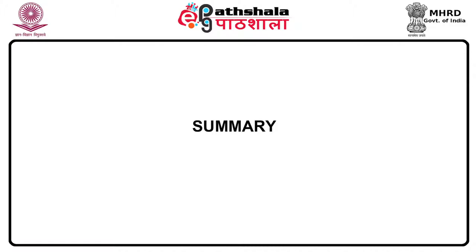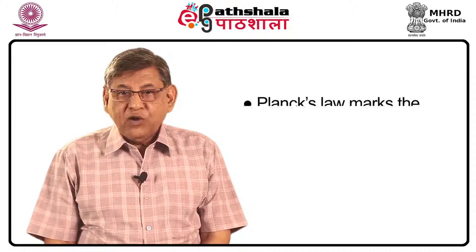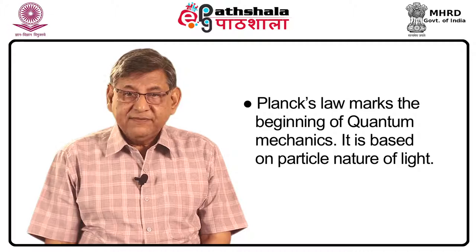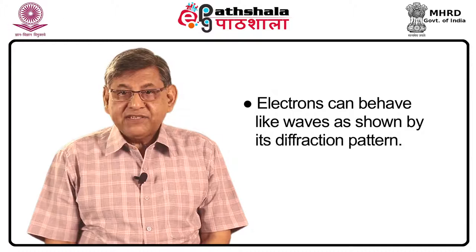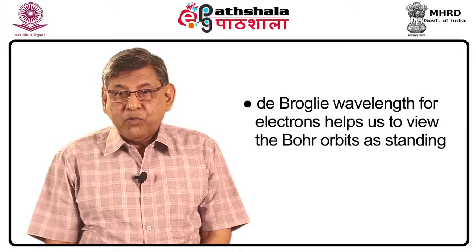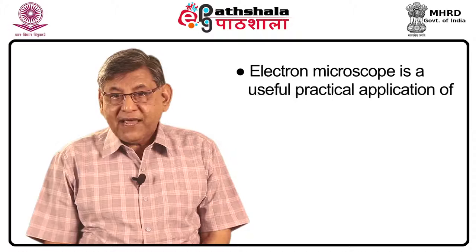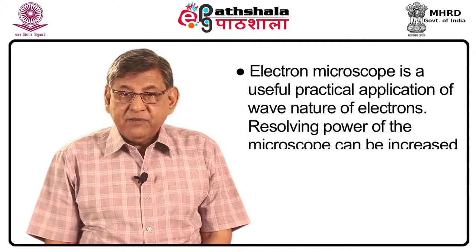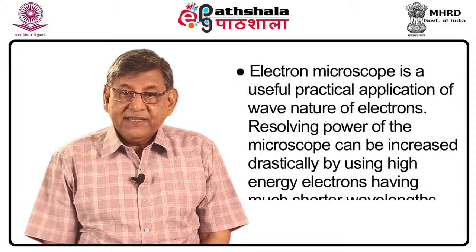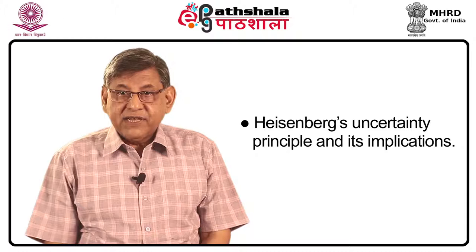Students, we have come to the end of the lecture. Let us summarize. Number one: Planck's law marks the beginning of quantum mechanics and is based on the particle nature of light. Number two: electrons can behave like waves, as shown by diffraction patterns. Number three: de Broglie wavelength for electrons helps us view Bohr orbits as standing electron waves. Number four: the electron microscope is a useful practical application of the wave nature of electrons, with resolving power increased by using high-energy electrons with shorter wavelengths. Finally, we have learned about Heisenberg's uncertainty principle and its implications. Thank you.